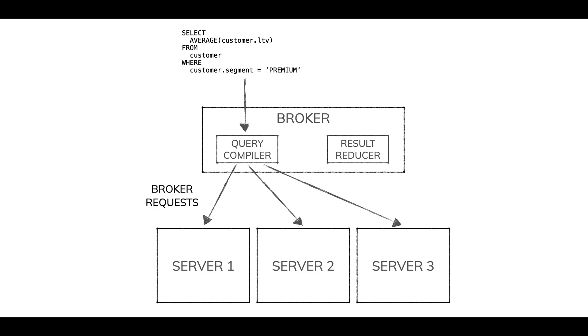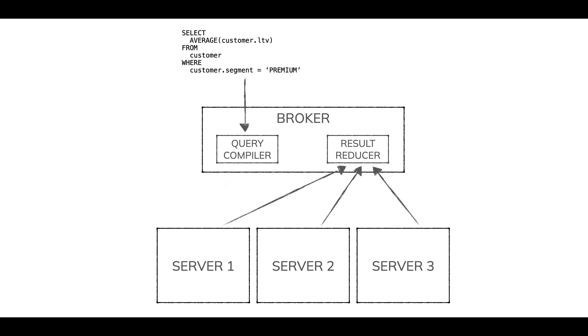Here's our broker. There are two components I'm pointing out: the query compiler and the result reducer. Here's a query — a good old filter and aggregate, nobody gets hurt. It comes into the broker, gets compiled. The broker looks at segment metadata and decides which three servers need to process parts of this query. They get scattered to those servers, the servers do their work, send the results back to the broker, which then combines them together. Each one of those numbers — literally a scalar coming back from each server — gets averaged together into that one single scalar result. It's great when not much data is moving around, and the traditional architecture serves this well.